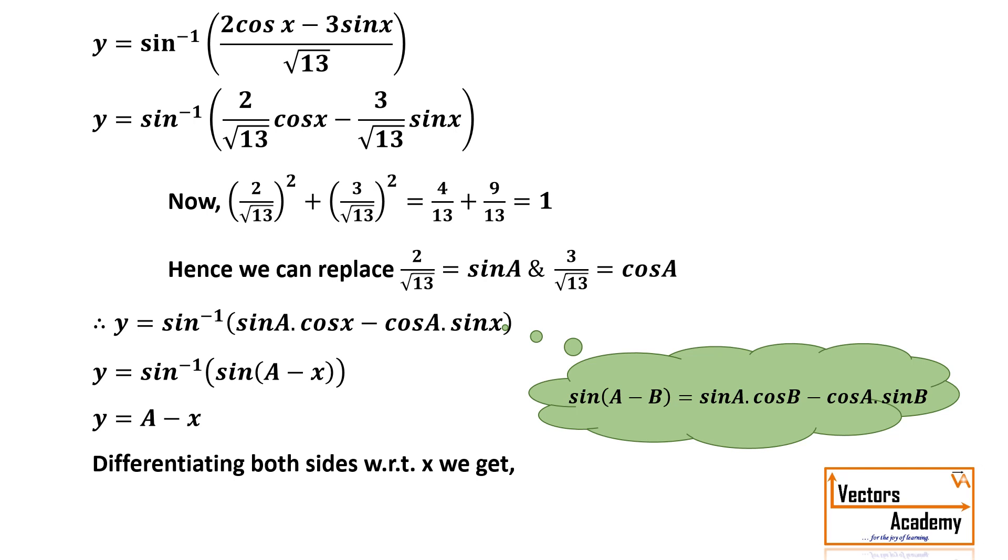Now you can differentiate both the sides. Derivative of y that is dy by dx. Derivative of a will be 0 as it's a constant term and derivative of x is 1. Hence the answer is minus 1.